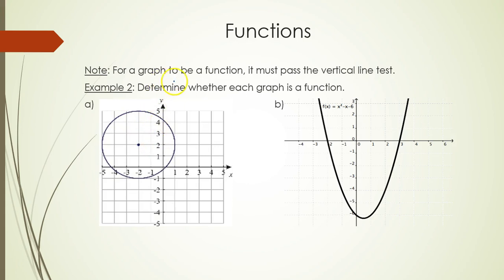Next, if we're looking at a graph, we can determine if it's a function using the vertical line test. This means that if we walk across the function or go across the function with a vertical line, we cannot touch more than one point at the same time.